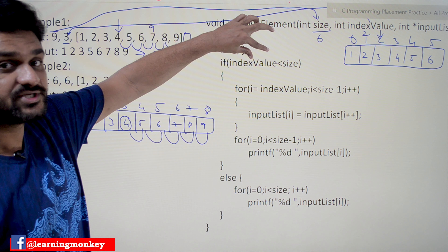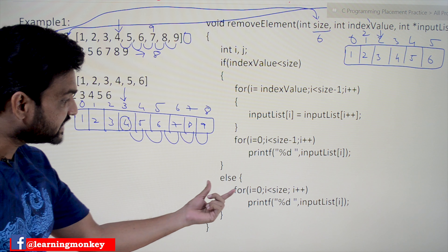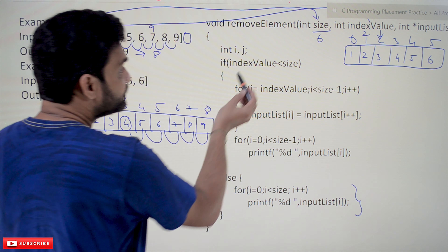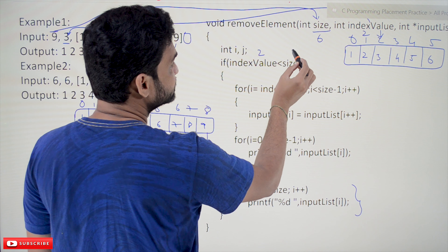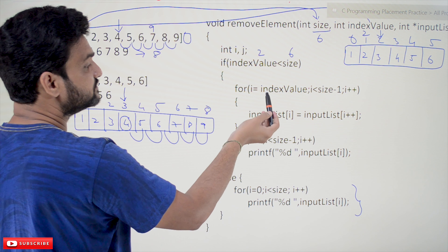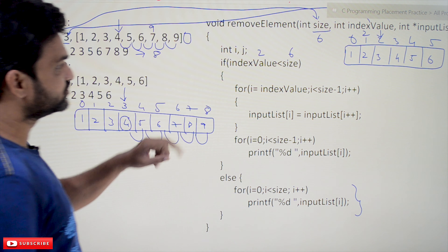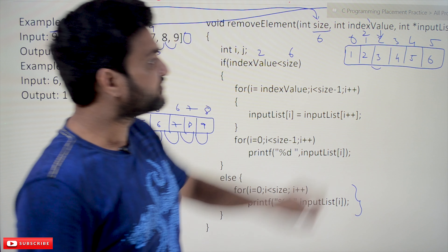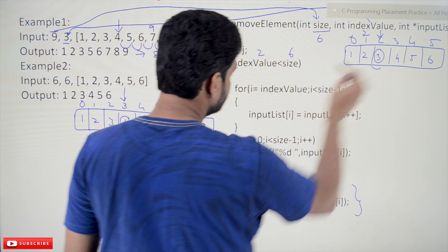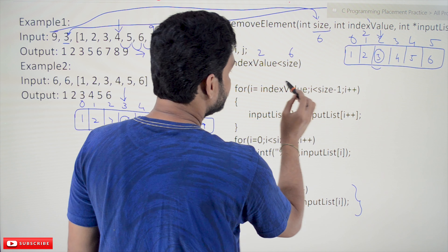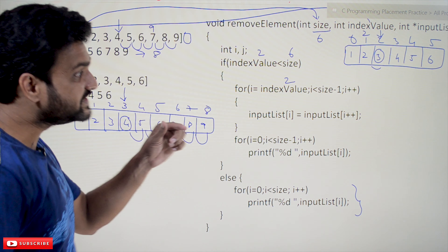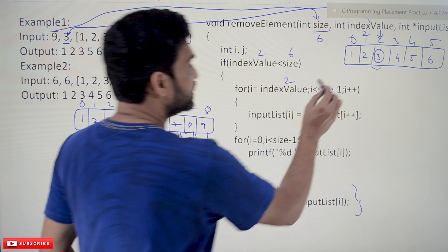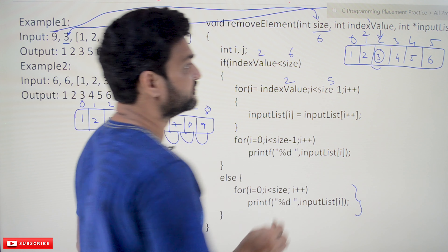If the index value is less than size, the removal logic executes; otherwise the else part prints the entire array. Here index value is 2 and size is 6, so we enter the if block. The for loop iterates from the index value to size minus 1 — that is, from 2 to 5. Why size minus 1 is important will be clear in the next step.